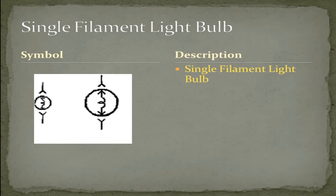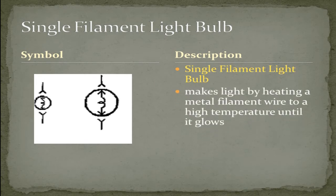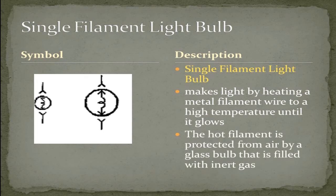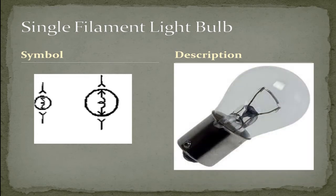A single filament light bulb makes light by heating a metal filament wire to a high temperature until it glows. The hot filament is protected from air by a glass bulb that is filled with inert gas. Here is an example which I believe is a 1156 single element light bulb.